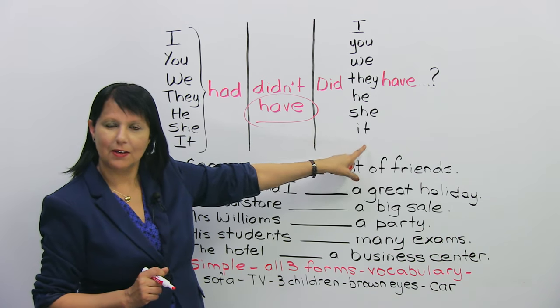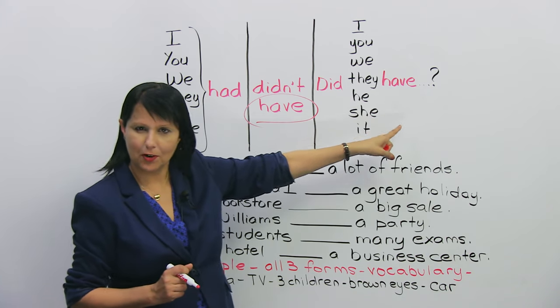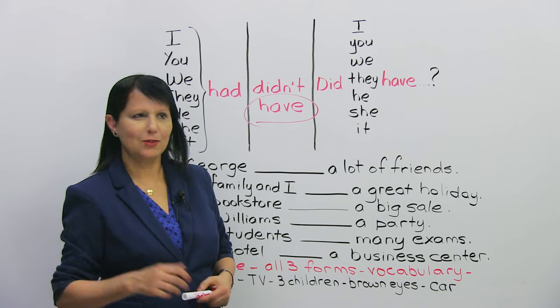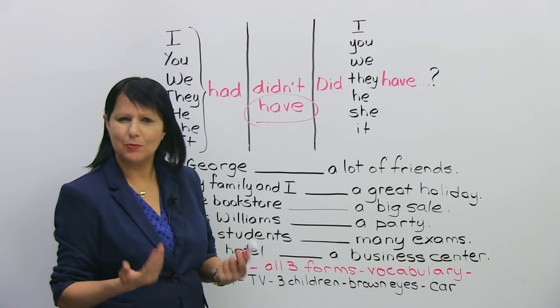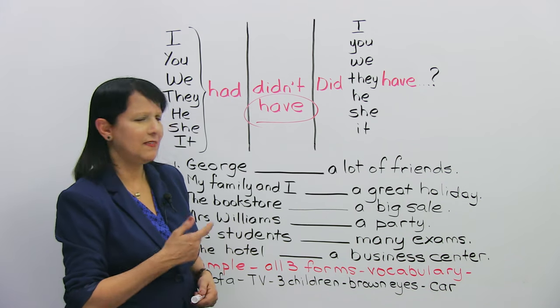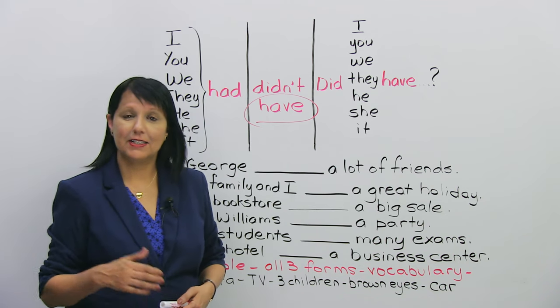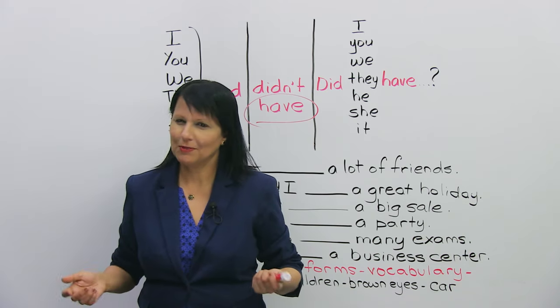Now, the same thing will happen when we have a question. We're going to come back to the base form of our verb. So, it's quite simple then. Did I have fun? I don't know, I think so. Did you have fun? Did we have fun? Did they have fun? Did he have fun? Did she have fun? Did it have fun? Okay? Alright.